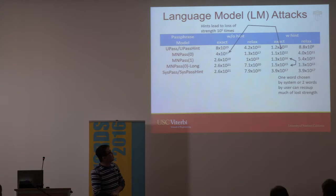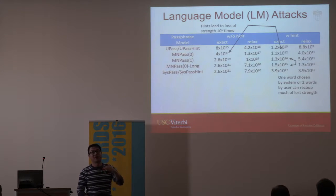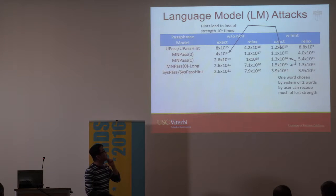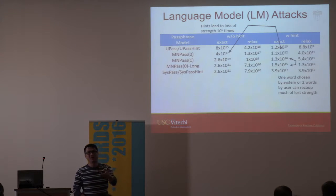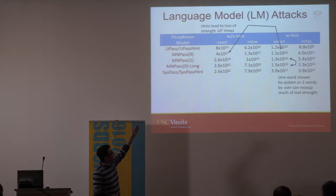When we did the attack analysis, we used a 1-billion word corpus to create language models and compute the precise probability of user-created and system-created passphrases. We calculated guess numbers according to Monte Carlo simulation. It turns out that when we present a hint to the user, the strength score loses about 10^5. The reason is that when you present the first letters, not only the user but also the attacker can use them to narrow down the word space, significantly reducing the number of guesses needed. This loss of about 10^5 was consistent across all approaches.